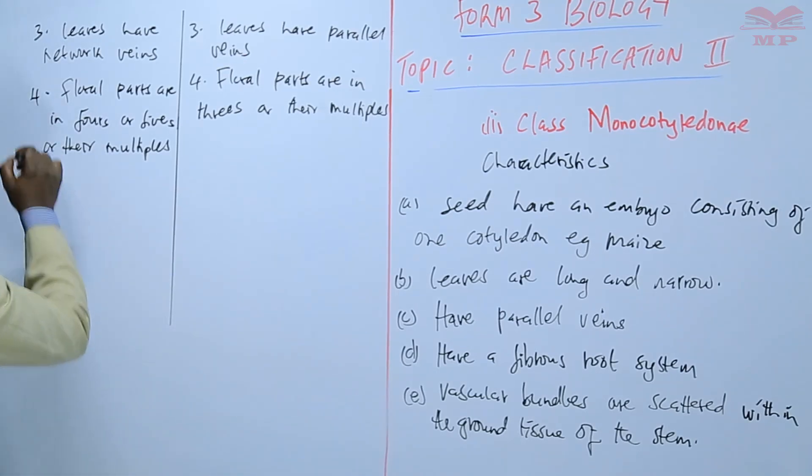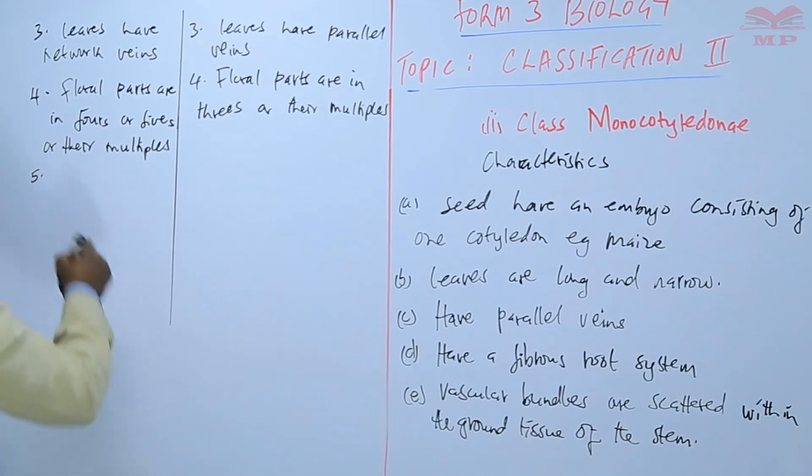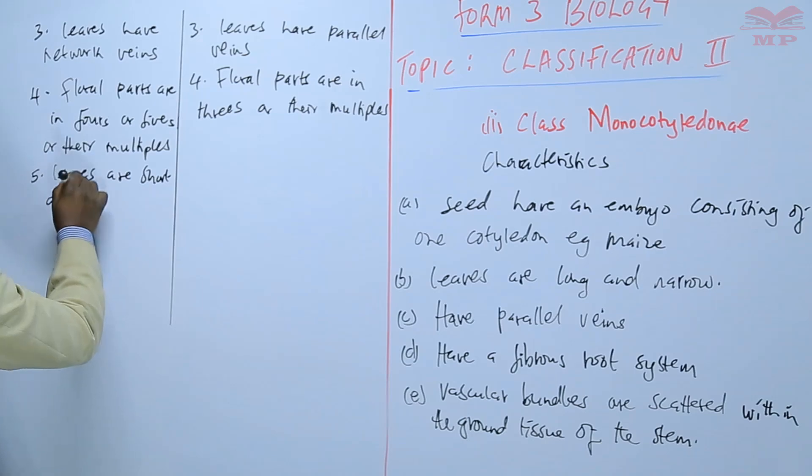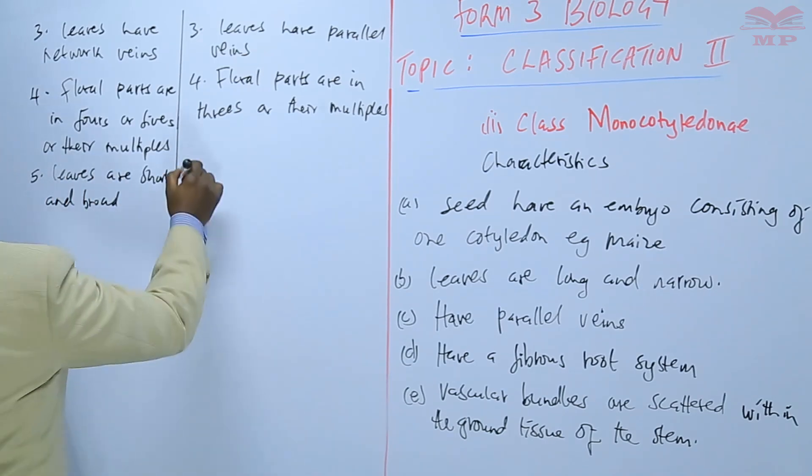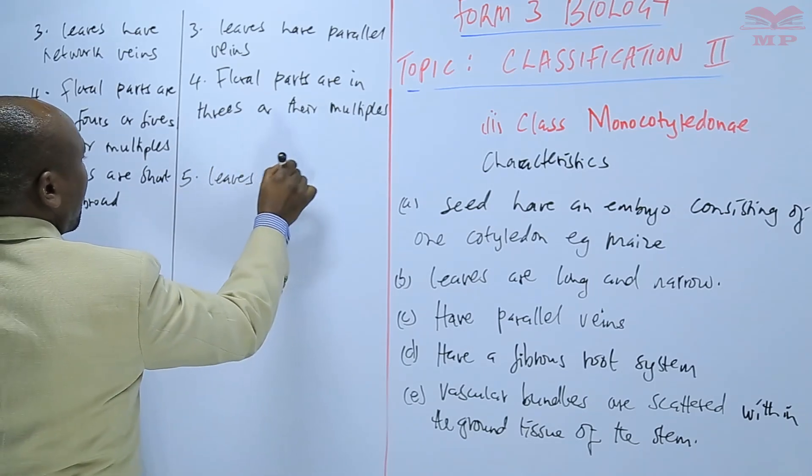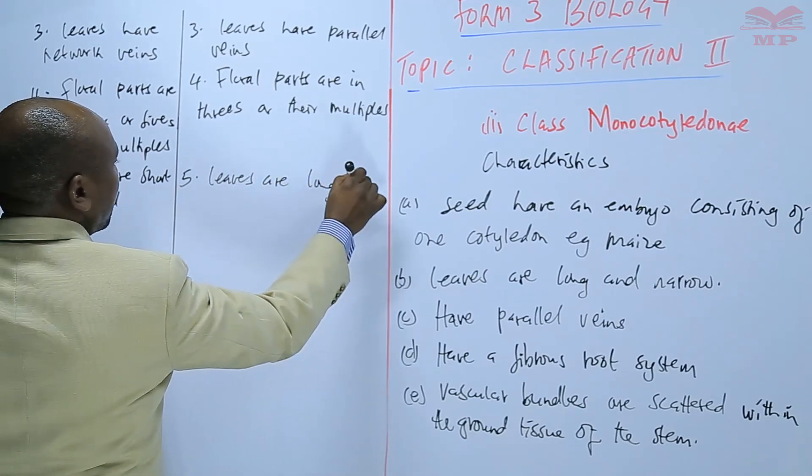Number five difference. In terms of the leaves, Dicotyledonae are short and broad. Monocotyledonae leaves are long and narrow.